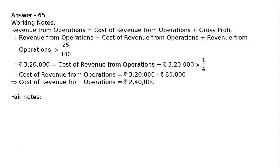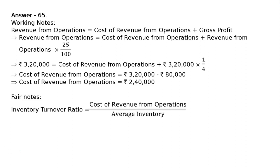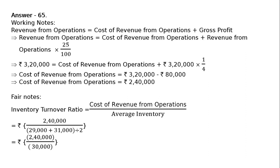Now, for the final calculation: Inventory Turnover Ratio equals cost of revenue from operations divided by average inventory, that is ₹2,40,000 divided by (₹29,000 + ₹31,000) / 2, which equals ₹2,40,000 divided by ₹30,000, giving an inventory turnover ratio of 8 times.